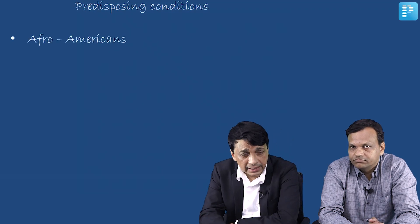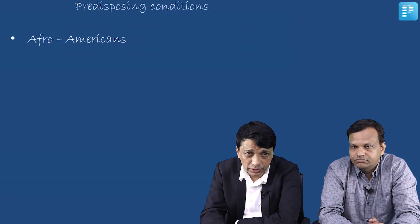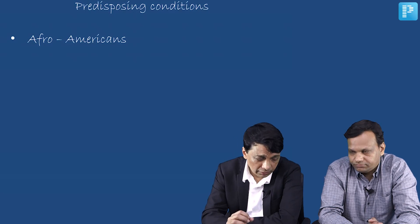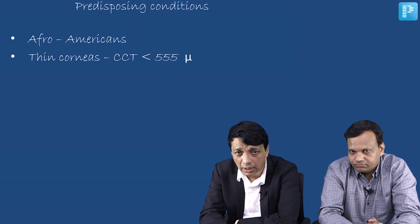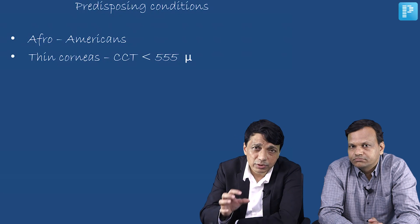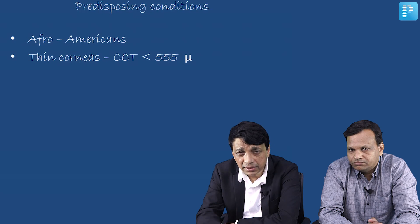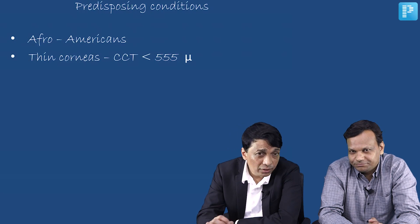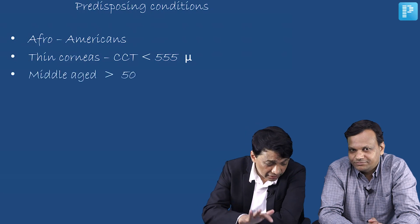The first risk factor is race. Afro-Americans and colored races particularly have a lot of glaucoma. Those with dark skin in Africa and Afro-Americans have a very high predisposition to glaucoma. Indians, for instance, do have glaucoma but it is mostly normal tension glaucoma. Thin corneas — please remember — CCT stands for central corneal thickness. Normal thickness is between 500 to 600 microns. If the cornea is thinner than 555 microns, you may develop glaucoma later on.